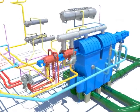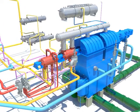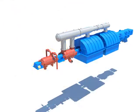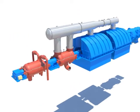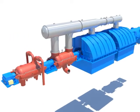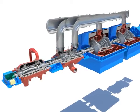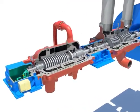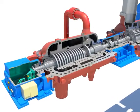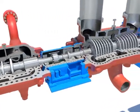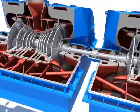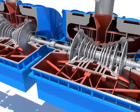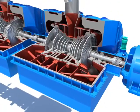The steam turbine is a heat engine which uses steam as a working fluid. It changes thermal energy into speed energy inside the nozzle by expanding high-temperature, high-pressure steam produced at the boiler, and also changes this speed energy into mechanical energy by crashing into the rotary vane.